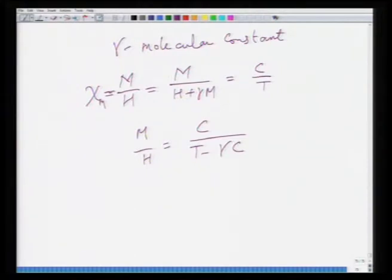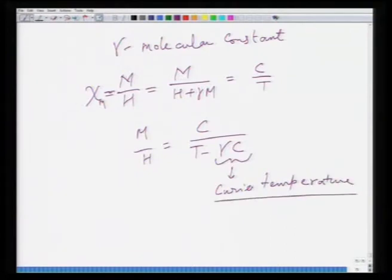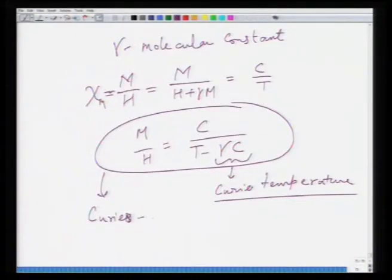The term gamma*C turns out to equal what is called the Curie temperature. This Curie temperature is the same as the transition temperature for most practical purposes, but when examined microscopically in the vicinity of this transition temperature, they are a little different. As a result, this expression is called the Curie-Weiss law or Curie-Weiss behavior.